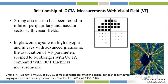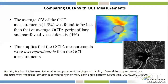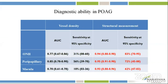OCTA is a new machine, so we always have to compare it with the existing standards in glaucoma care: visual field and OCT-RNFL. There is a strong association found in the inferior peripapillary and macular sector with visual fields. In glaucoma eyes with high myopia and in those with advanced glaucoma, the association of visual field parameters seems to be stronger with OCTA than compared to OCT-RNFL. When we compare OCTA with OCT-RNFL measurements, the average coefficient of variation of the OCT measurements was 1.5% while that of OCTA was 4%. The area under the curve (AUC) of both peripapillary vessel density and RNFL thickness ranges between 0.85 to 0.95.